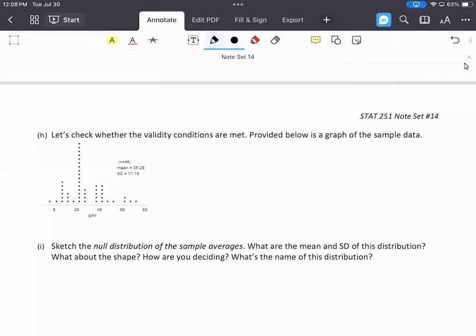So letter H, let's check whether the validity conditions are met. Provided below is a graph of the sample data. Taking a look at this data, it doesn't look highly skewed, and we have n equals 48, which is definitely greater than 40. There's a large population - there are more than 480 Cal Poly students. So the validity conditions are met.